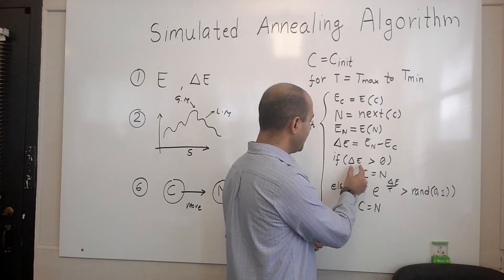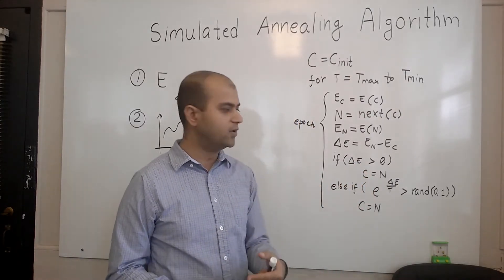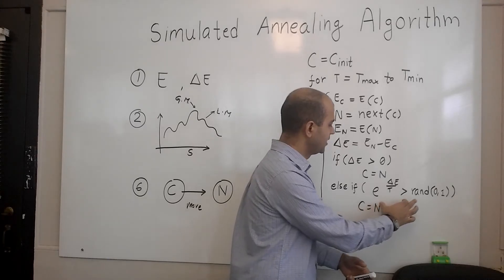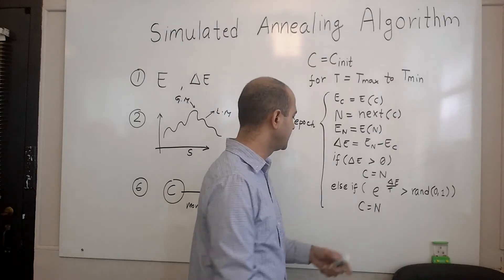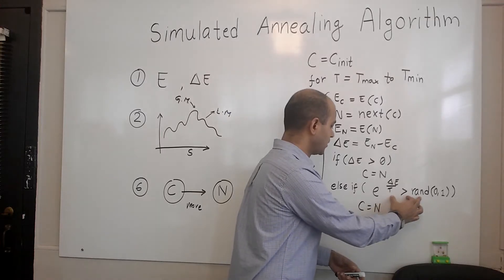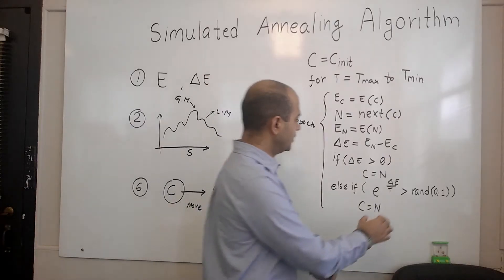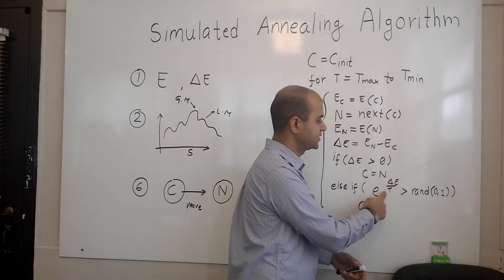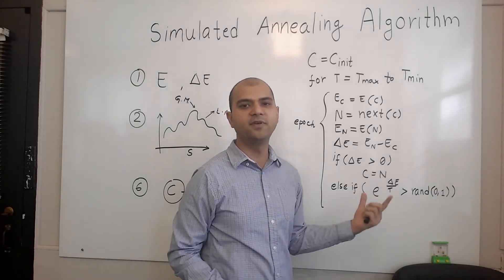At every step, if the change in energy is negative — in other words, if we are making a bad move — we compute a probability. If the probability is very high, we accept the move even if it is a bad move. If the probability is low, we have low probability to accept the bad move. This probability depends on two variables: the change in energy delta E and the temperature factor T. When temperature is very high, the probability of accepting the bad move becomes very high.